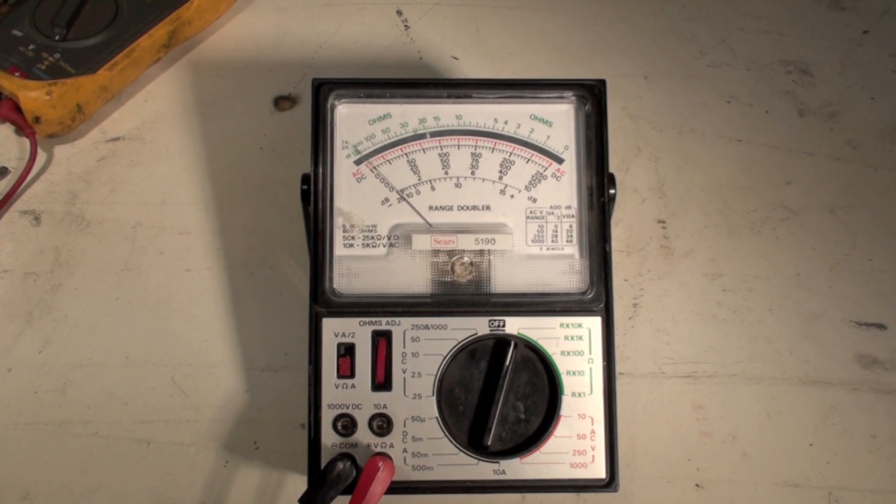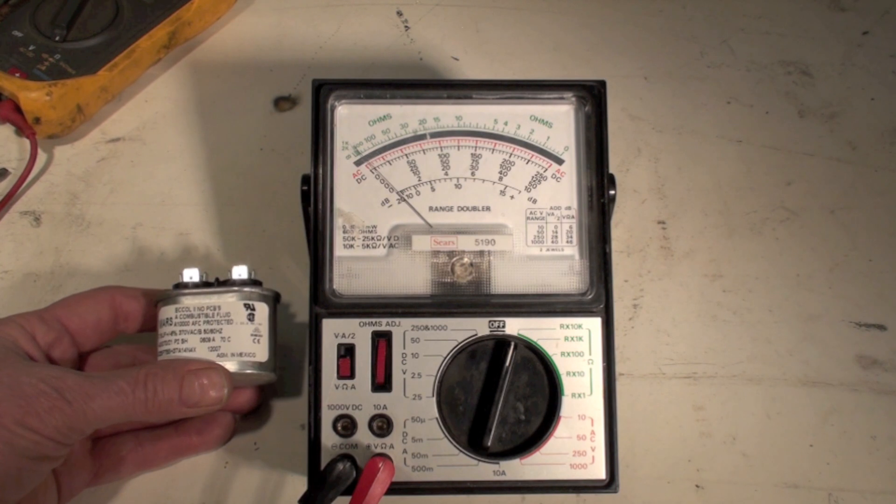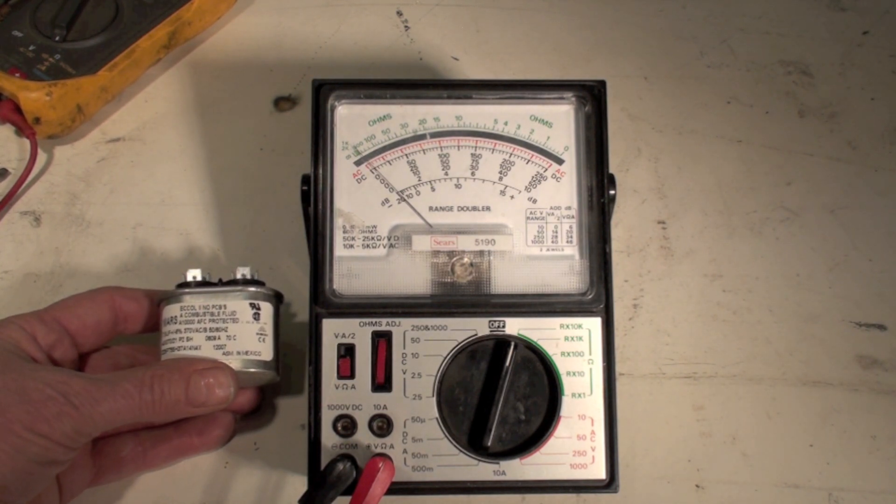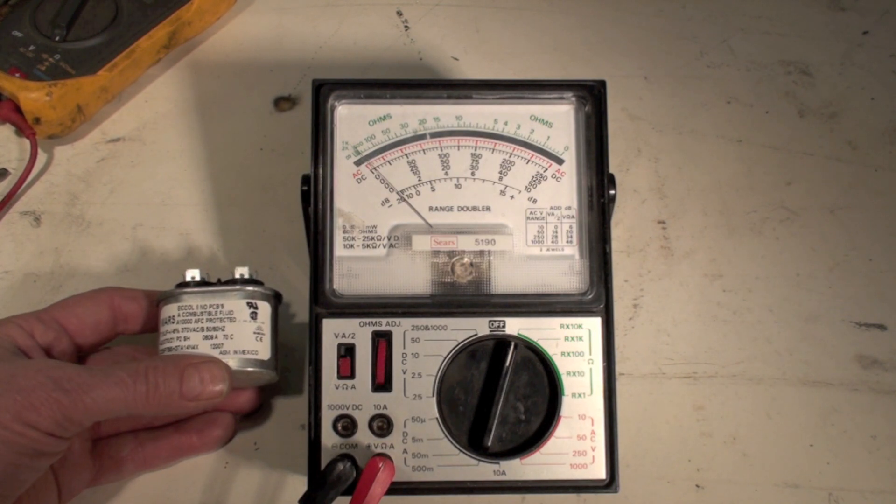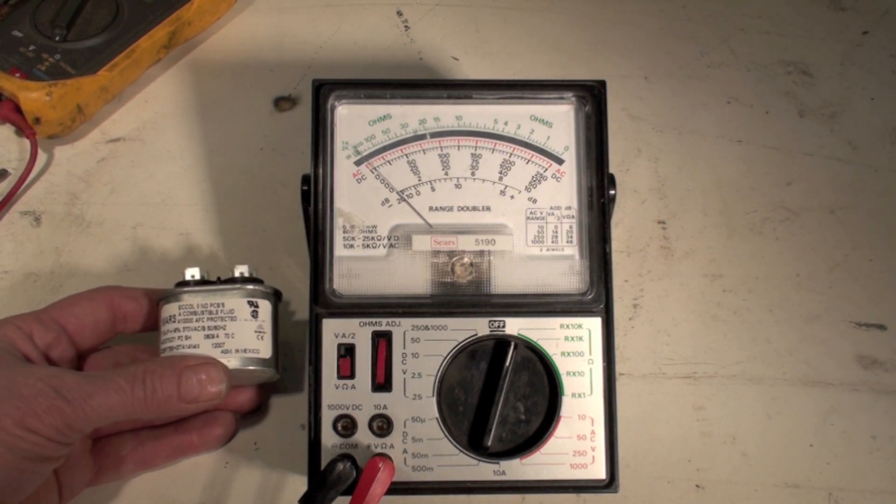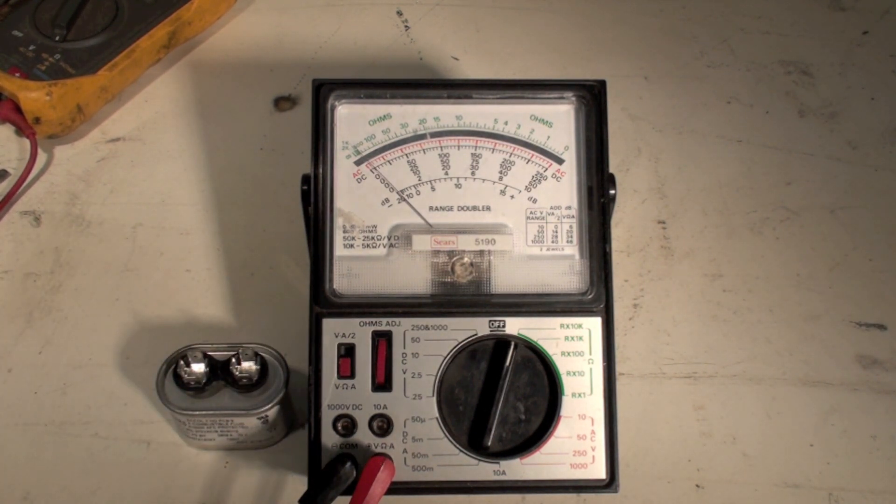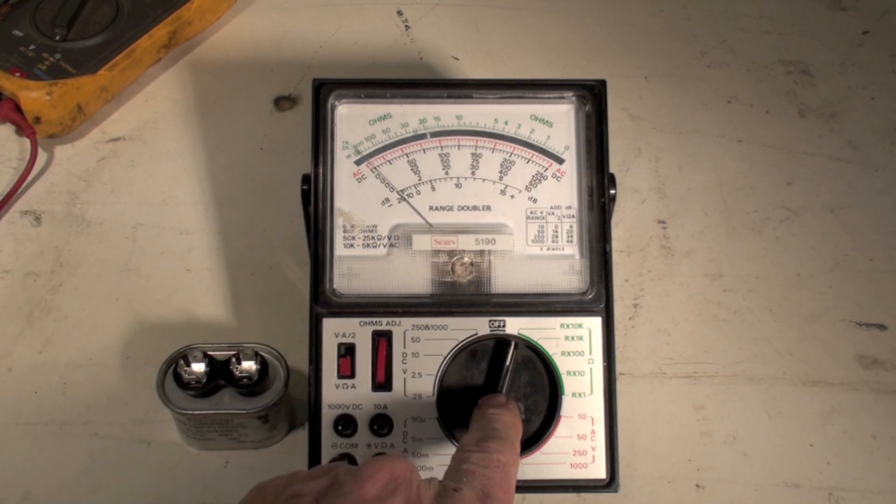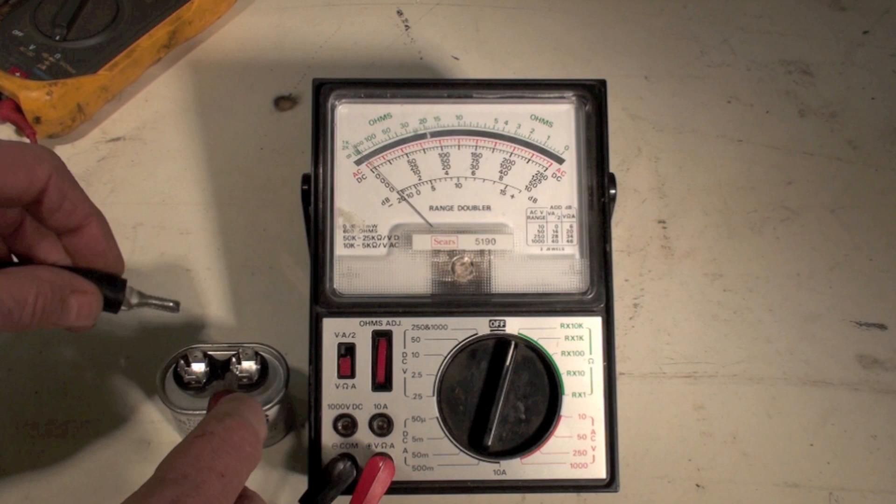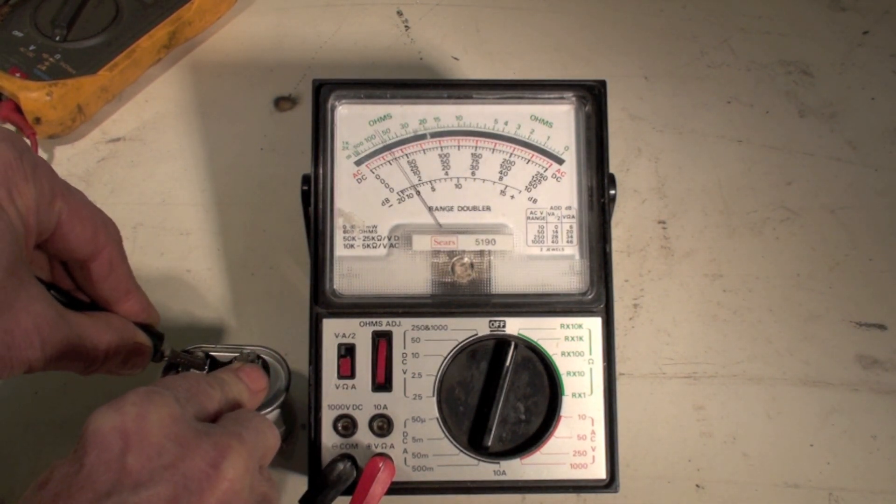This meter had one little thing that I used to use it for. Not particularly this one, it was a different one. But this is a capacitor, it's a run capacitor off a motor. And we did not have capacitor testers, or at least they were not common back then. So we use this as kind of a makeshift capacitor tester. And if I put the range in R times 10k, and I put my leads across this, you see it goes up, and then comes back down.